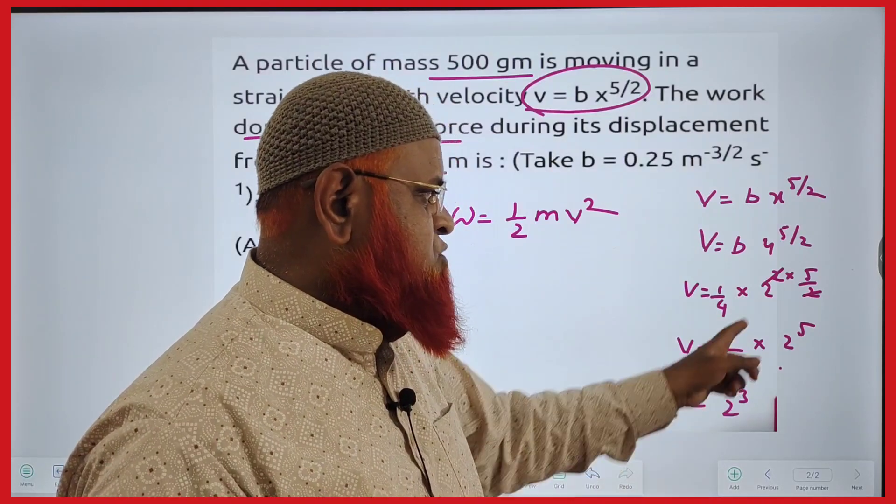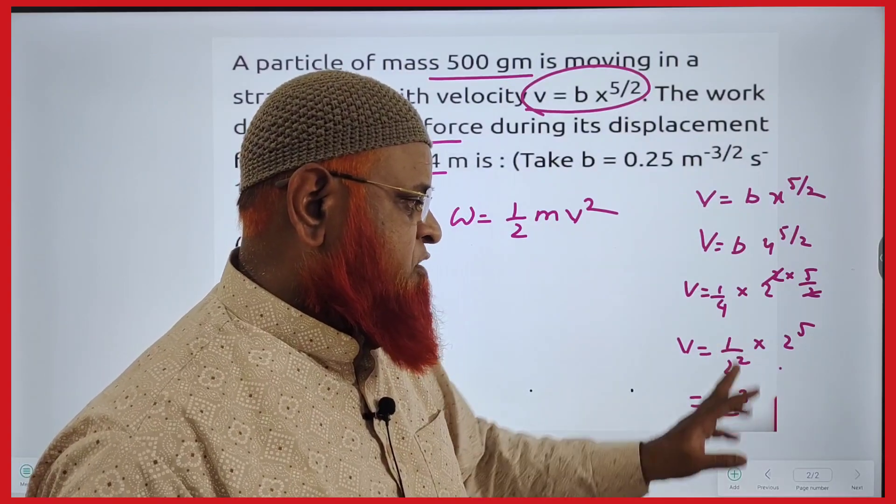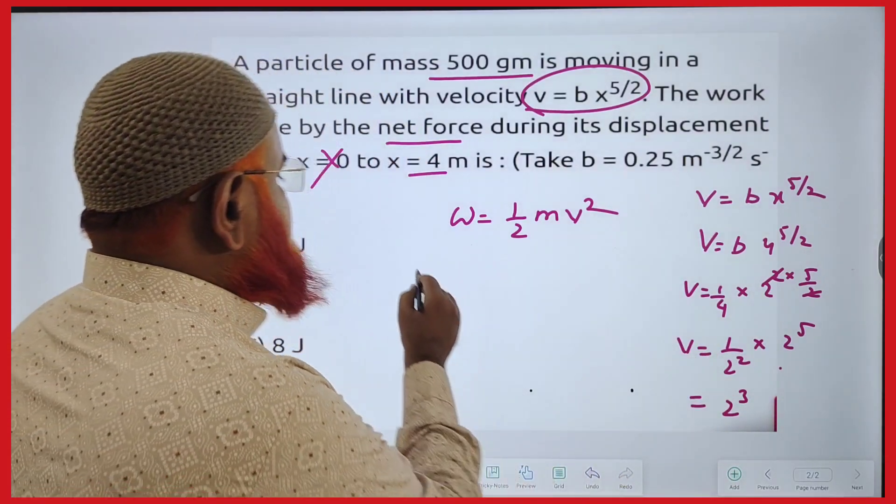So this is 1 by 2 square. Then 4 means 2 square, 2 gets cancelled, 2 power 5. So 2 square, 2 power 5 gets simplified, being 2 cube here. That's it.